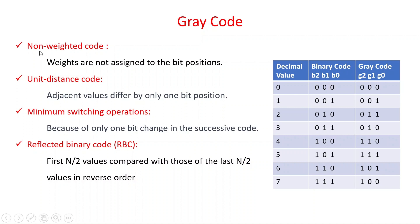The grey code number system is a non-weighted code. It is called non-weighted because there is no significant weight for each bit position. In the binary number system we have weights like 8, 4, 2, 1, but in grey code there is no significant weight for each position. That is why it is called a non-weighted or unweighted code.